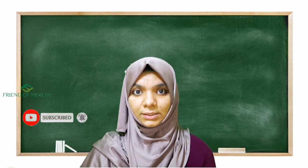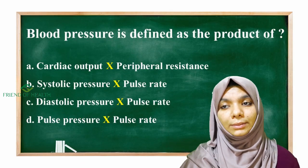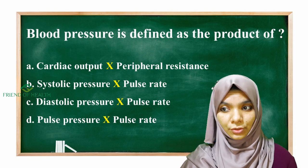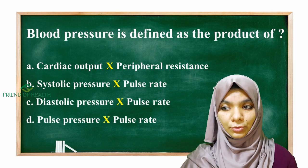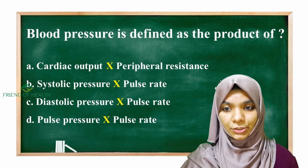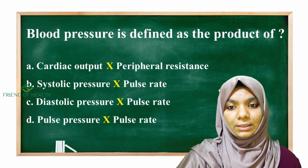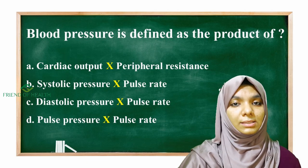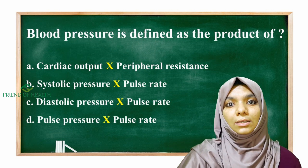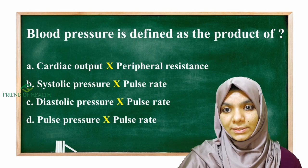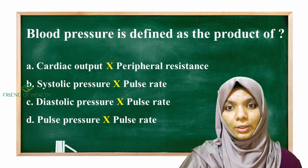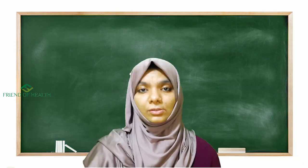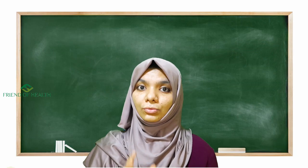Returning to the question: blood pressure is defined as the product of which option? Peripheral resistance is one of the important factors that maintain blood pressure, and so is cardiac output. Therefore, blood pressure is the product of cardiac output into peripheral resistance — which is option A.